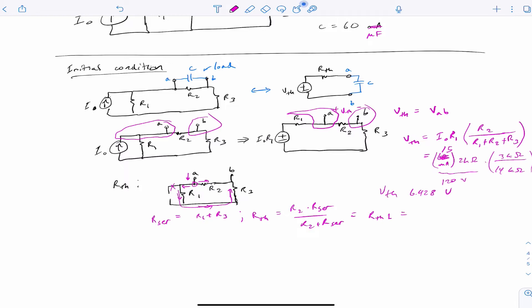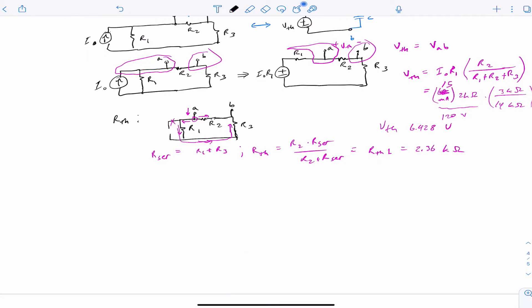For this I get R Thevenin 1 for position 1 of the switch 2.36 kilo-ohms. So our Thevenin circuit looks like this. In steady state it becomes clear that the voltage across the capacitor is just the 6.428 volts. So we'll write down our initial condition because we know it now.